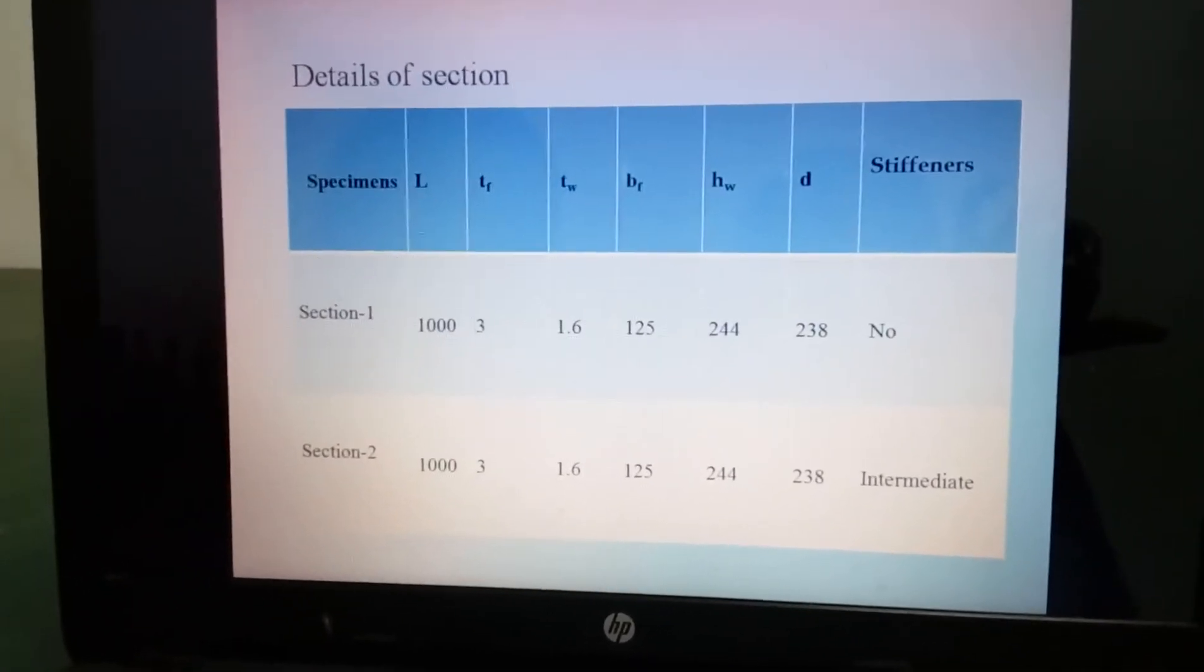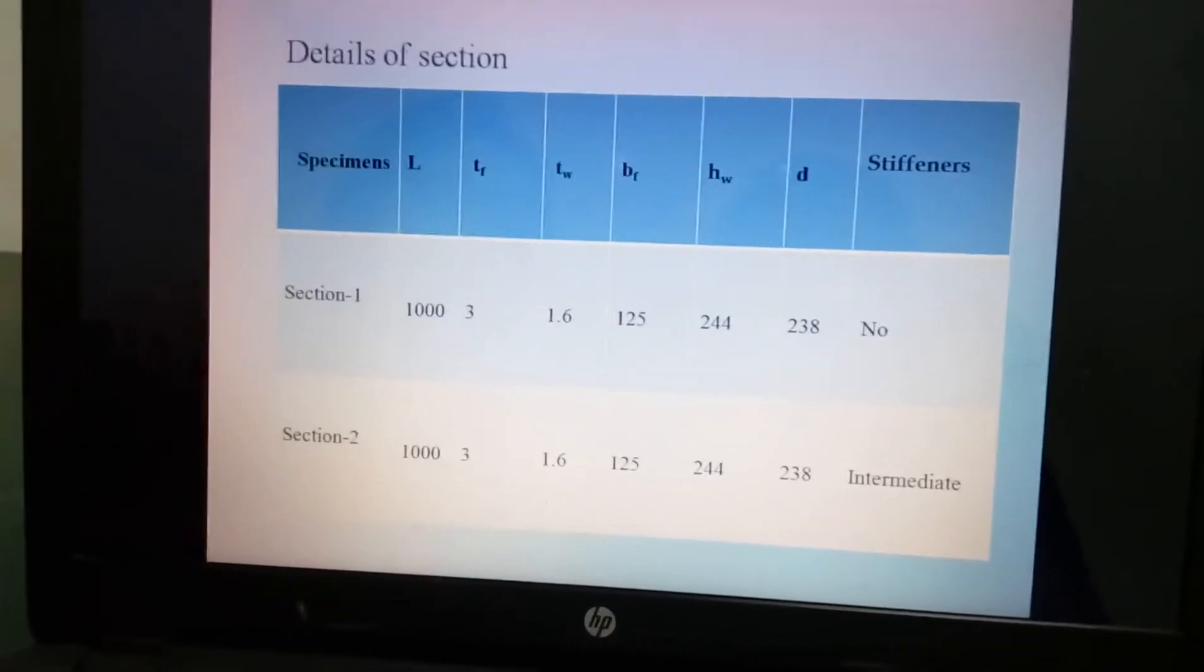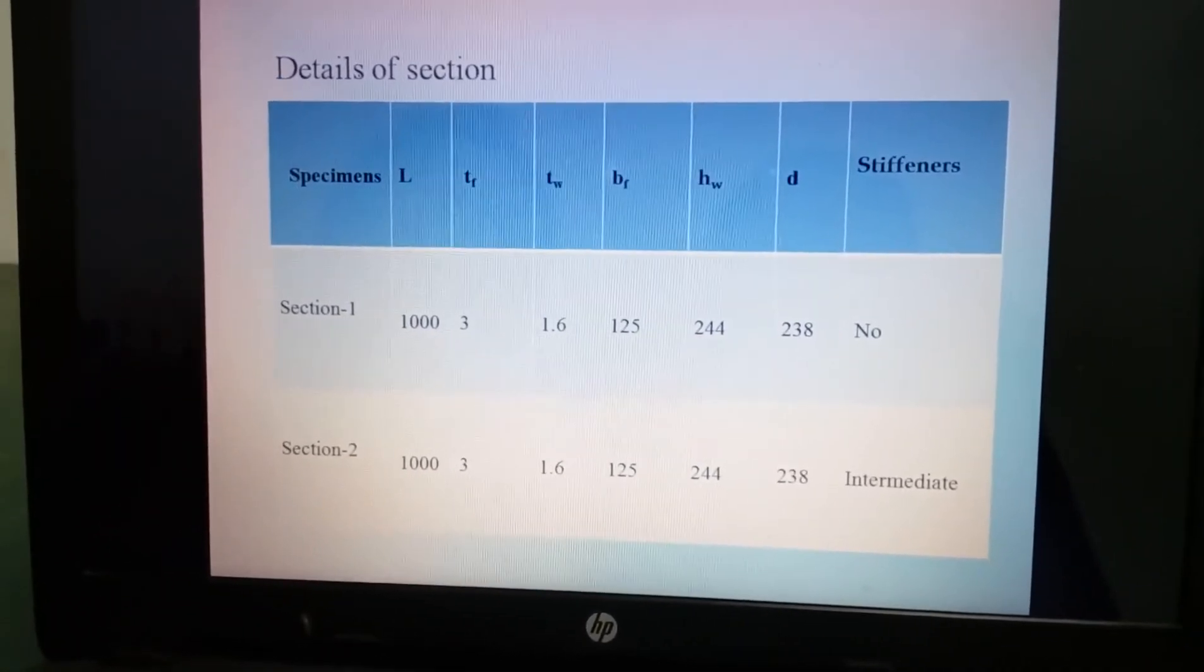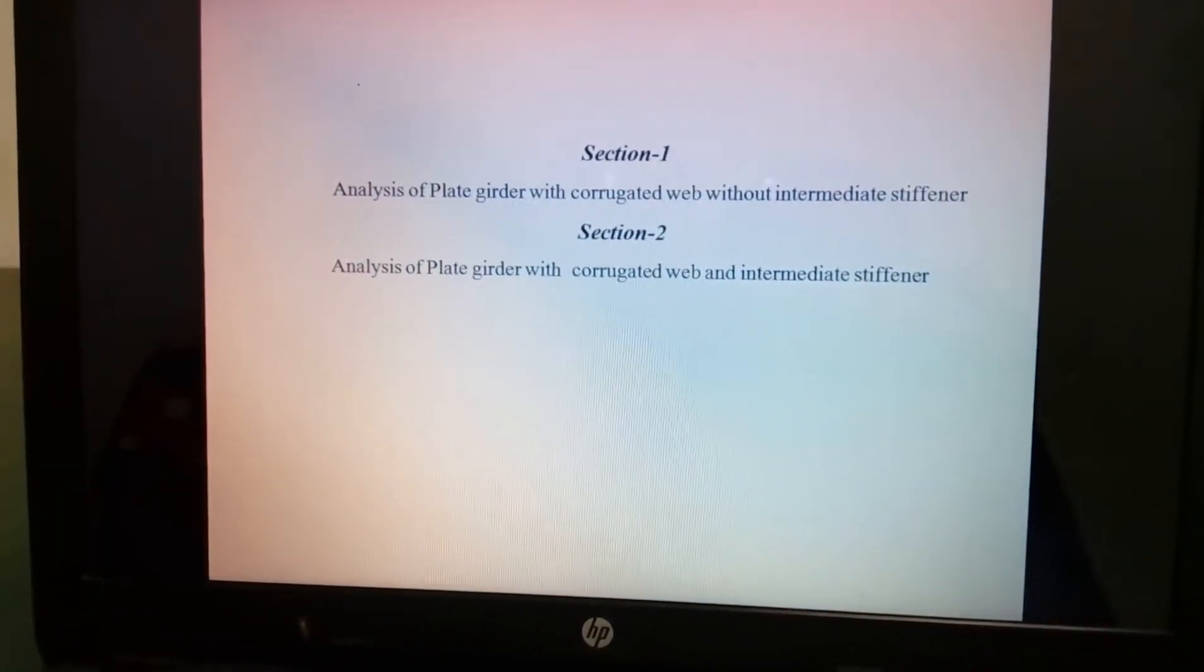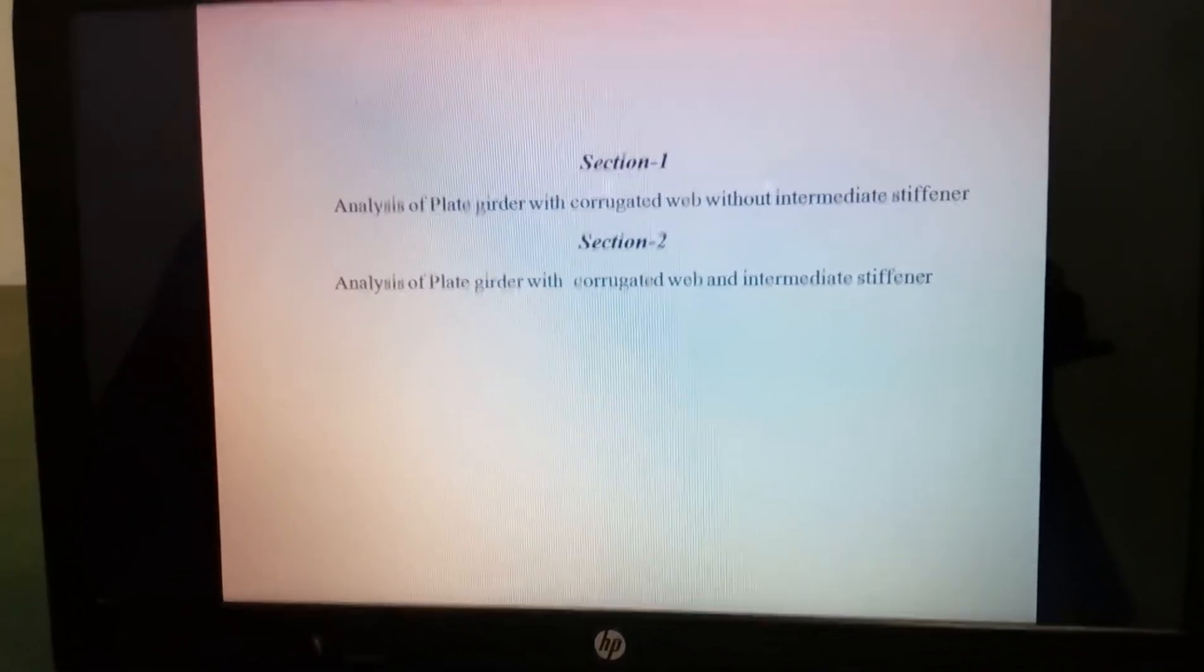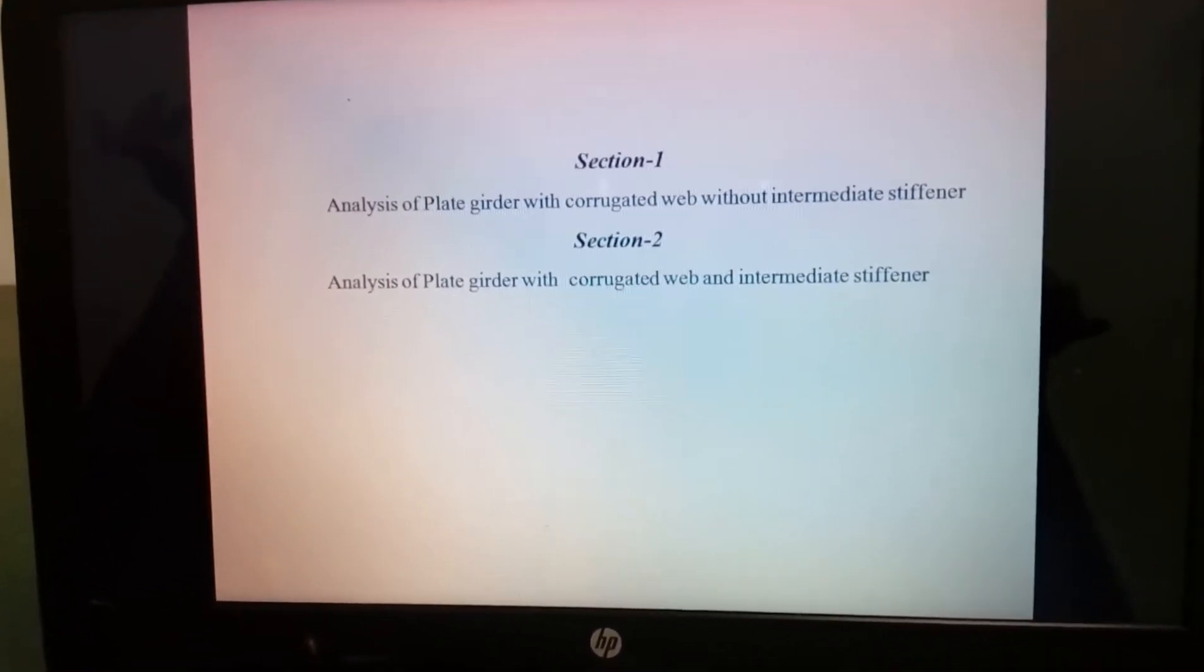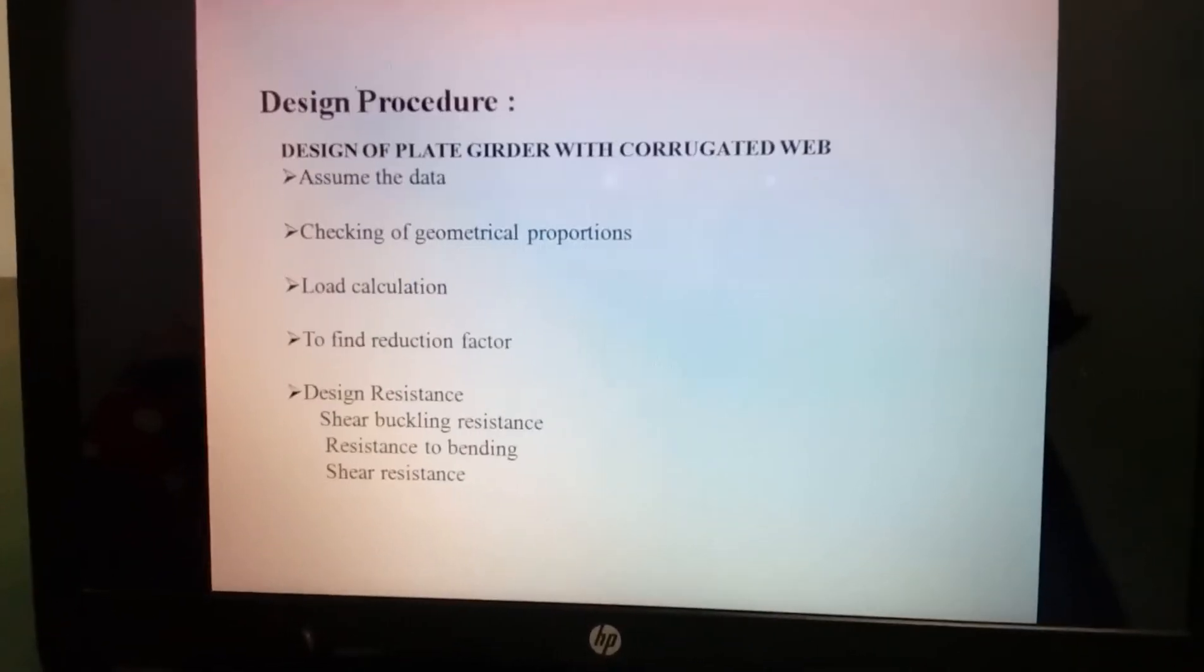In section 1 there is no stiffener. In section 2 same as section 1 but intermediate stiffener is provided here. In section 1 we analyze plate girders with corrugated web without intermediate stiffener. In section 2 analysis of plate girders with corrugated web and intermediate stiffener.